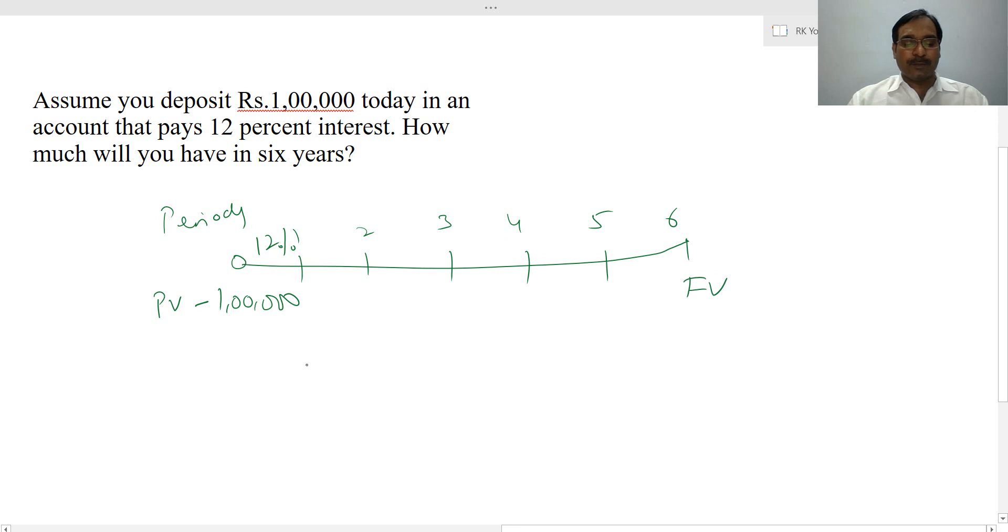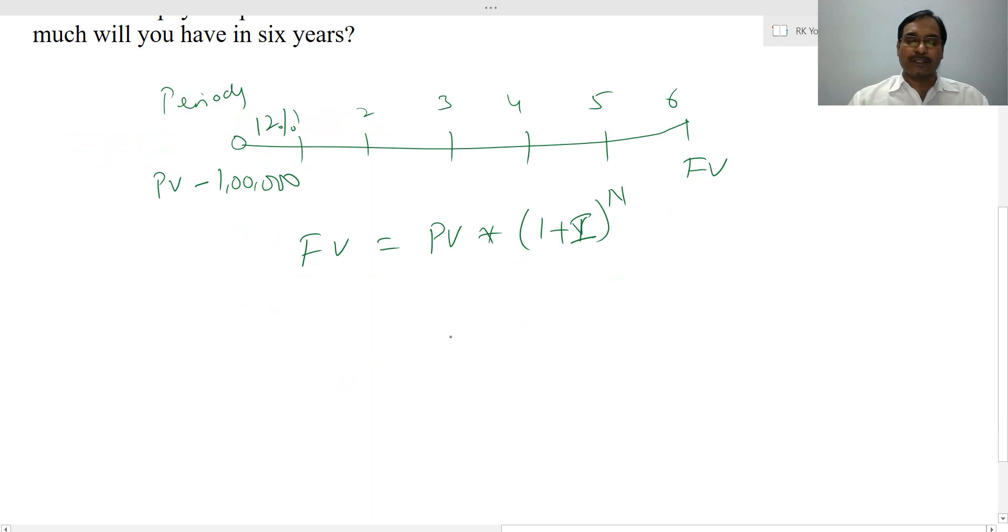We'll use the formula approach directly here. Future value equals present value into (1 plus i) to the power of n. Some authors use 1 plus r. Here we use 1 plus i. This equals 1,00,000 times (1 plus 0.12), 12% in decimals, and n is 6. So this equals 1,00,000 into 1.12 to the power of 6.